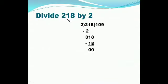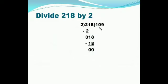Next example: 218 divided by 2. Here 218 is the dividend and 2 is the divisor. First digit is 2, and 2 ones are 2, so 2 minus 2 is 0. Bring down 1. You cannot divide 1 by 2, so bring down 8 as well, and add 0 in the quotient. It becomes 18. Since 2 nines are 18, 18 minus 18 is 0. The quotient is 109 and the remainder is 0.